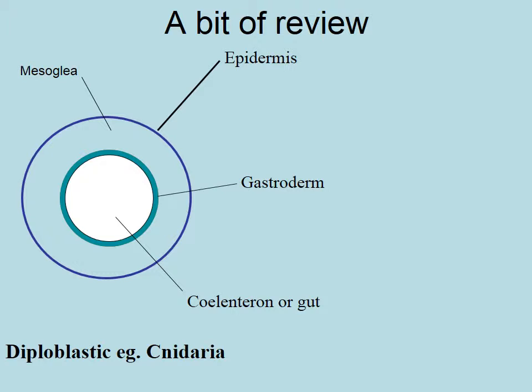Just the concept of diploblasty versus triploblasty. We've been looking at very small stuff so far, with the exception of the Nemertians, which get very big. When we look at a diploblastic organism like Cnidarians, you can see that they've got the epidermis on the outside and the gastroderm on the inside.